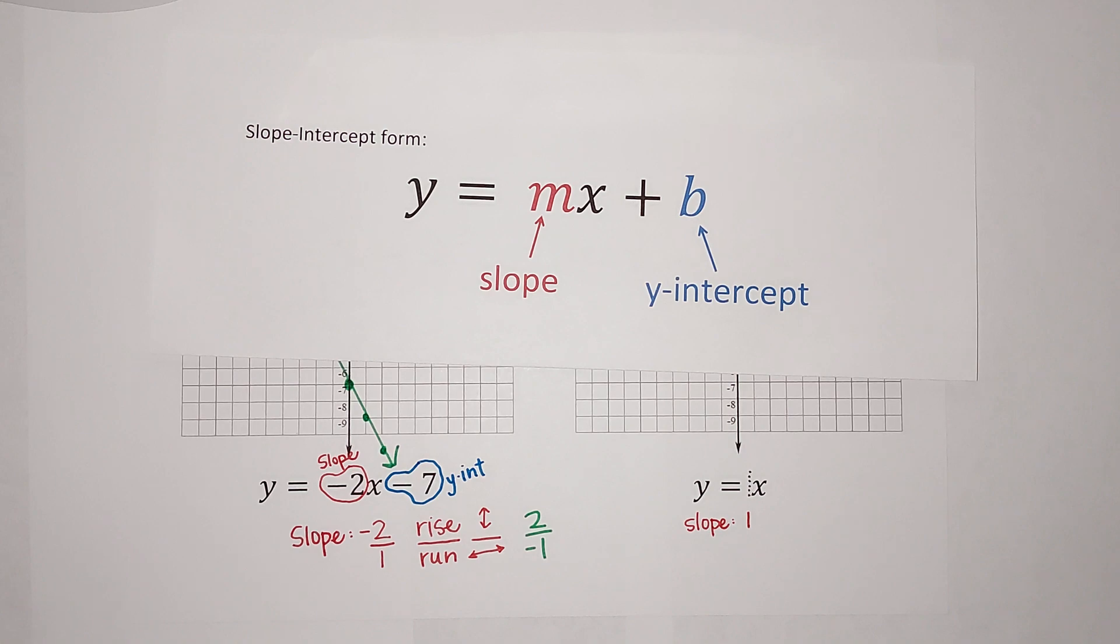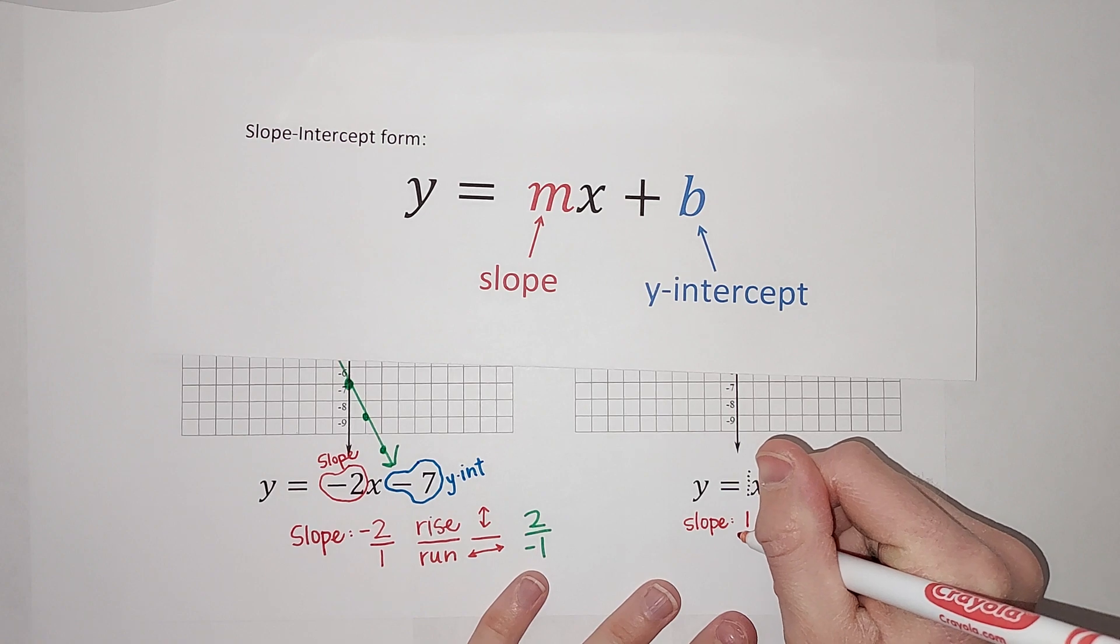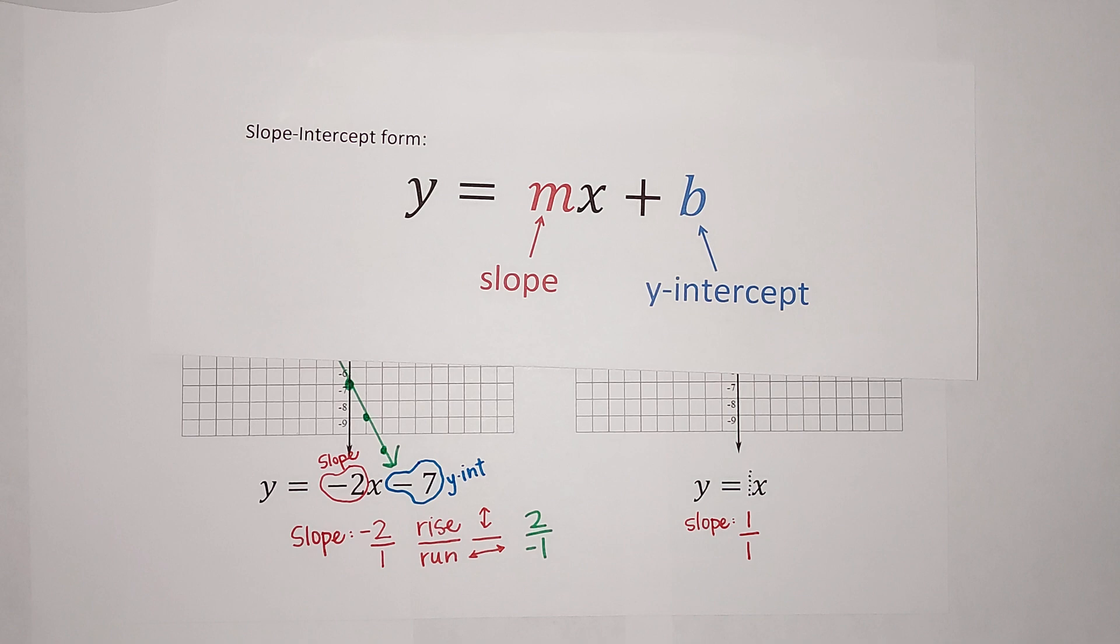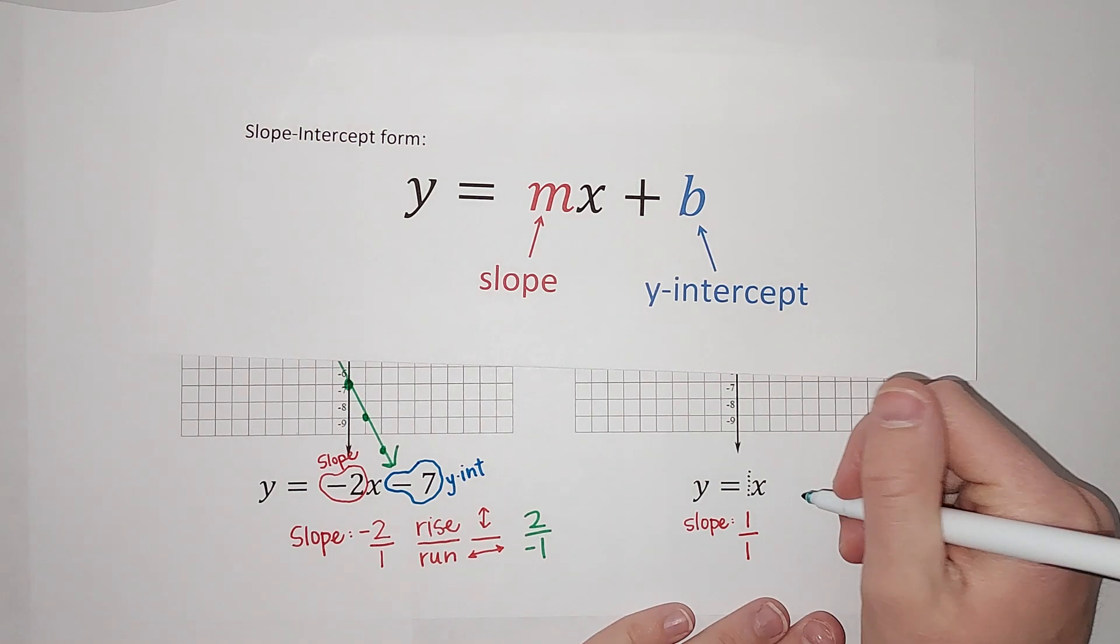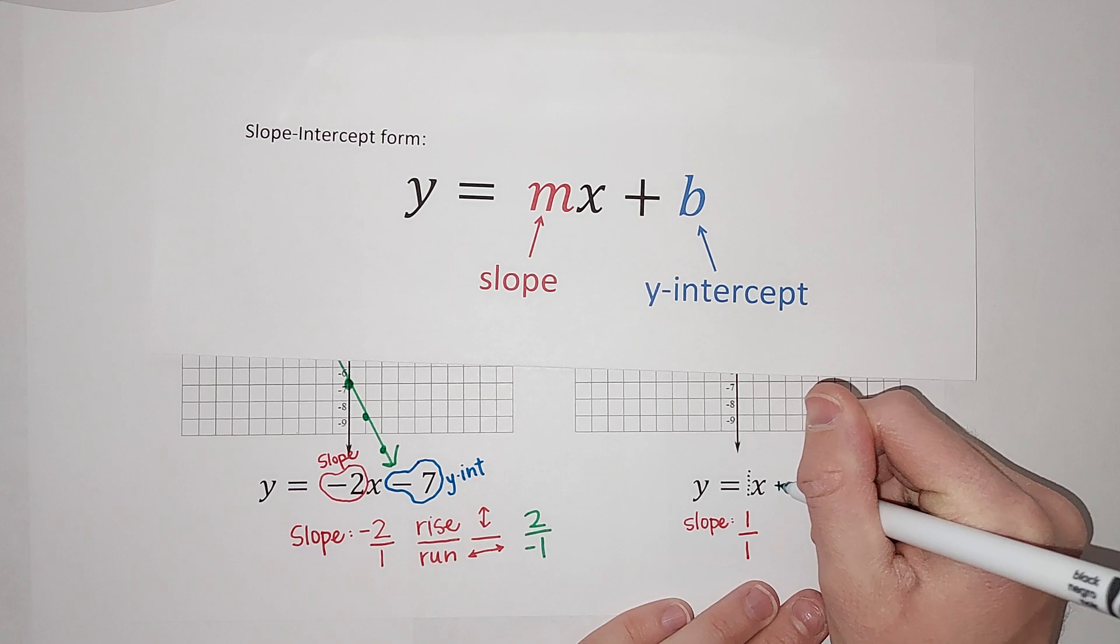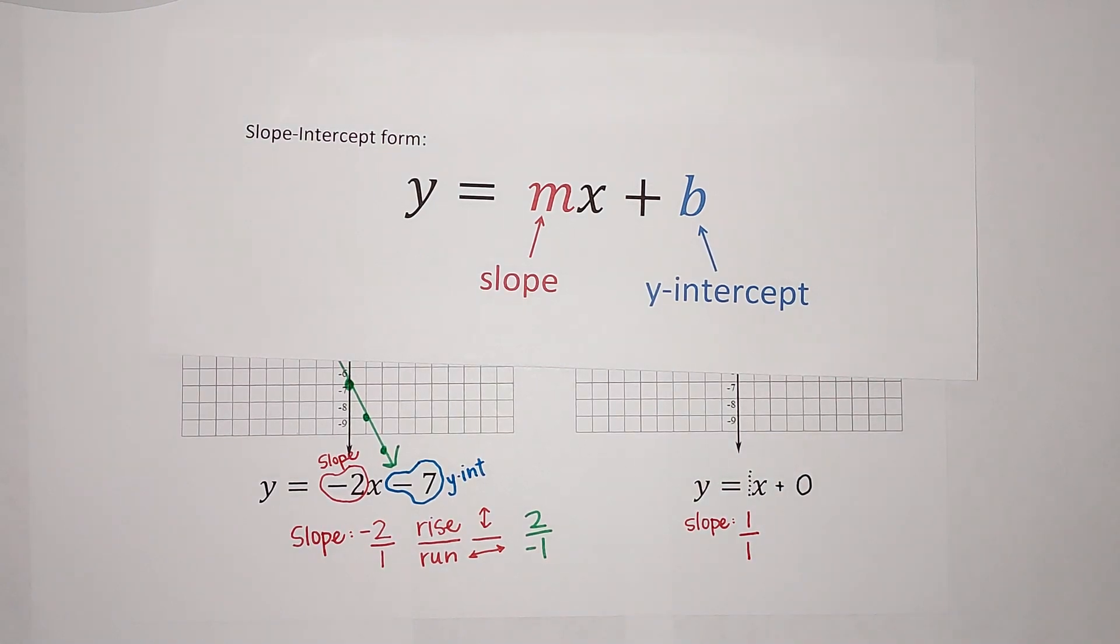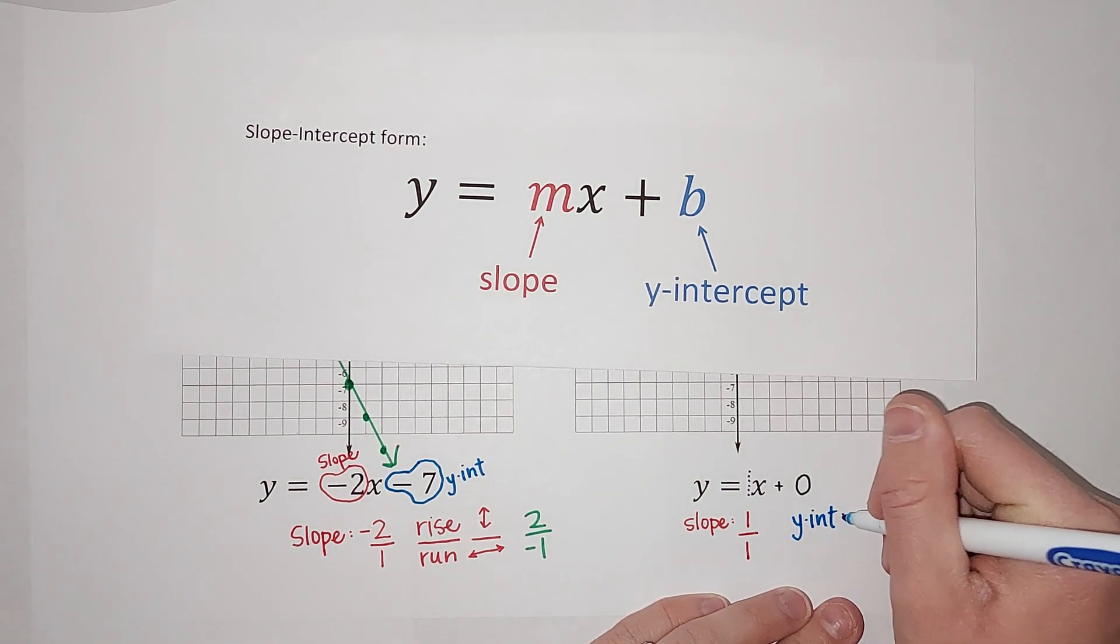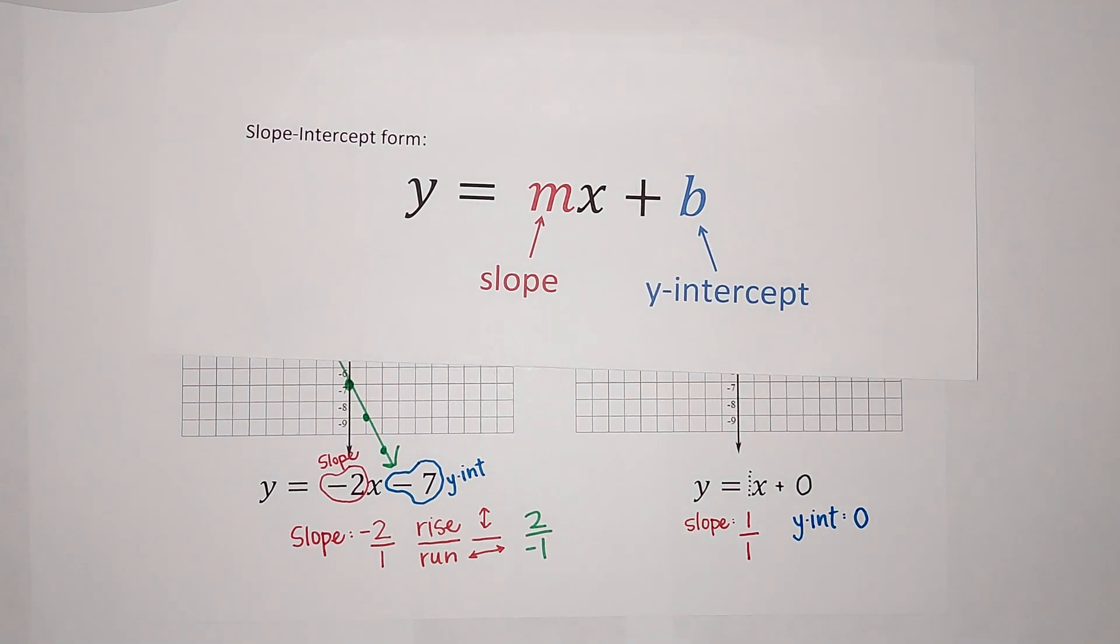Again, we like slope to be a fraction. So how do we make this into a fraction? It's just over 1, right? Because 1 divided by 1 is 1. And then what about my Y-intercept? Well, hang with me. I could write this as plus 0, right? That doesn't change what my equation is because anything plus 0 is just itself. So that means my Y-intercept is 0. There we go.